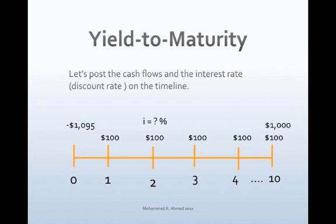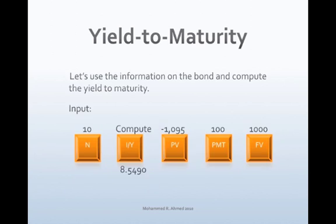Assuming that interest on the bond is paid annually, let's compute the yield to maturity using a financial calculator using the time value of money function. Enter the data in the following order: 10 N, 1095 plus/minus PV, 100 PMT, 1000 FV, then press the compute key and the I/Y key for TI, or the I key for HP. The result is 0.08549, or 8.549%. If you invest in a $1,000 10% corporate bond and hold it until it matures, the rate of return to the investor is 8.549%.